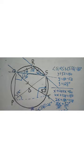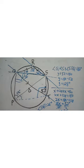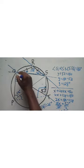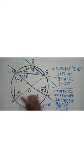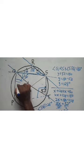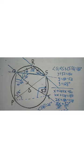The next part asks us to find angle PQT. The angle subtended by the diameter PS on the circumference is 90 degrees, so angle PQS equals 90 degrees. Since SQT is 26 degrees, the angle PQT equals 90 minus 26, which gives 64 degrees. So angle PQT is 64 degrees.